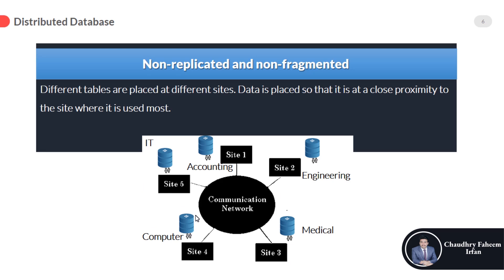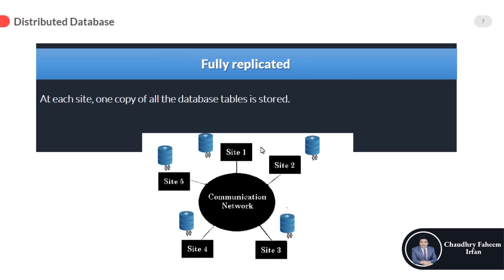This design is more reliable for database systems where the percentage of queries needed to join information from tables placed at different sites is low. We store data according to the site's requirement — if site 1 requires accounting data, we store accounting data at site 1. The second design is fully replicated.